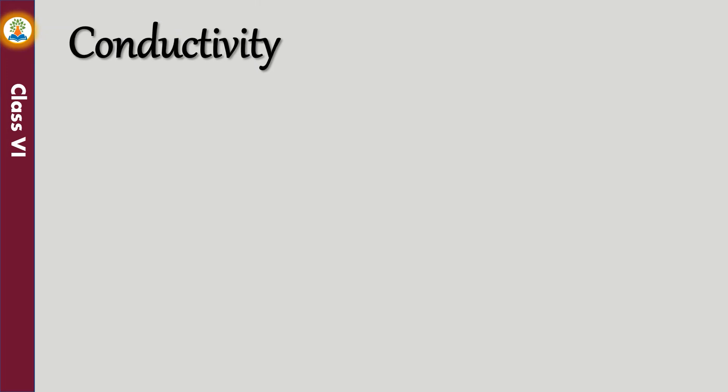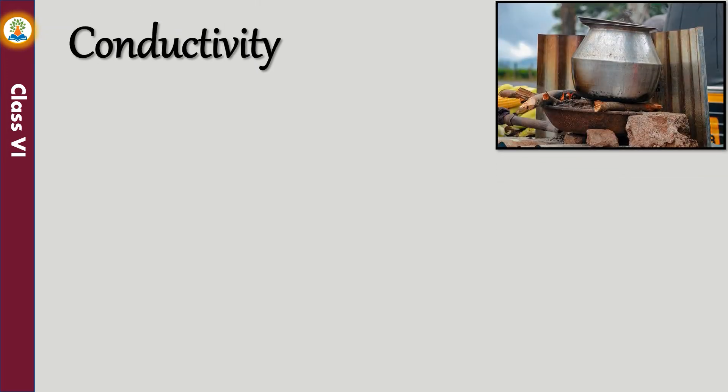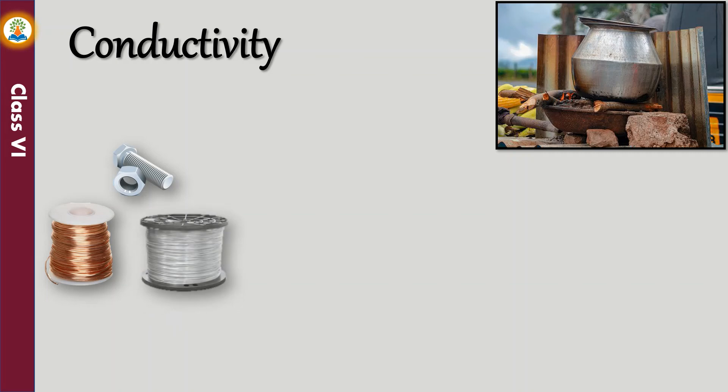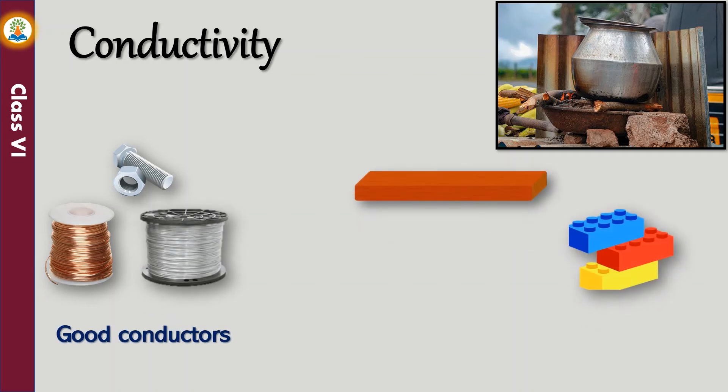Metals are good conductors of heat and electricity. Cooking vessels are therefore made of metals. Similarly, electric wires are made of metals such as copper and aluminum. Wood and plastic are bad conductors of heat and electricity.